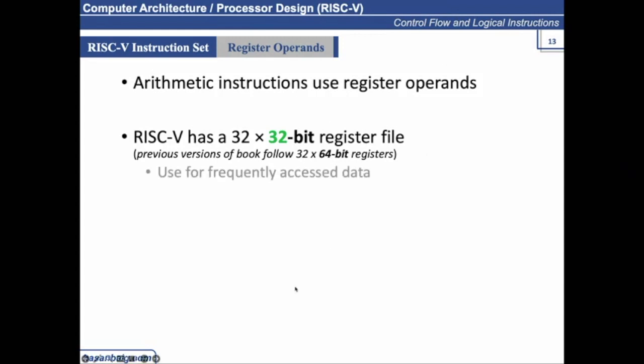So it is used for frequently accessed data. First of all, there are 32 general-purpose registers, and their names are X0, X1, X2, and X31.